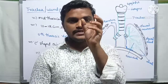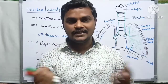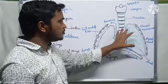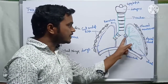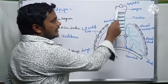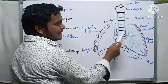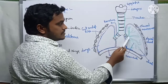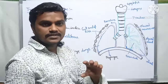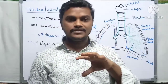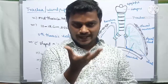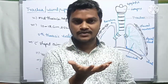At the 5th thoracic vertebra, the trachea bifurcates and enters into the lungs. In the diagrammatic representation, this region is the trachea, and these are the bronchi that enter into the lungs. The lungs are the respiratory organs of humans.